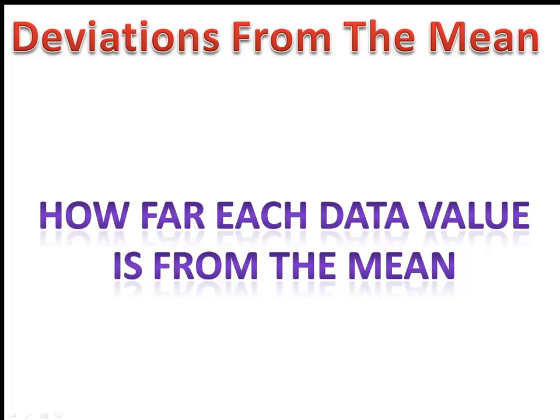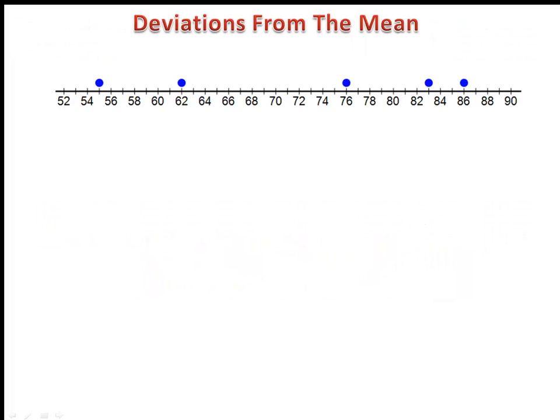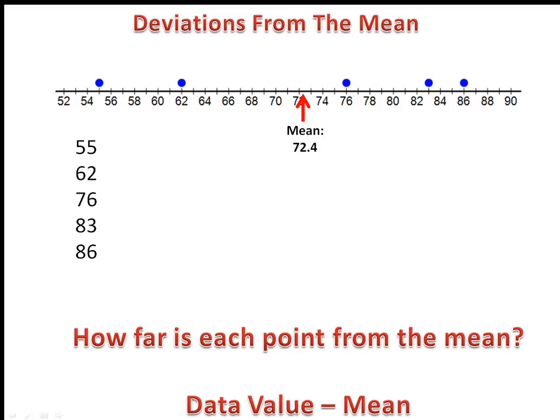Speaking of the mean and how spread out the data points are, that brings us to our next topic: calculating deviations from the mean. We want to find out how far each value is from the mean. Here we have our scores from the blue team. We begin by calculating the mean, which is 72.4. Now we can find the deviations. For 55, that is 17.4 units below the mean, found by taking 55 minus the mean. If the number is negative, like negative 17.4, the data value is less than the mean.